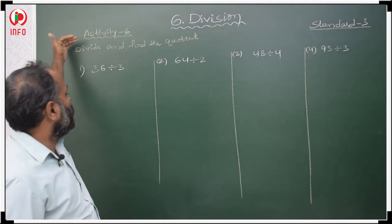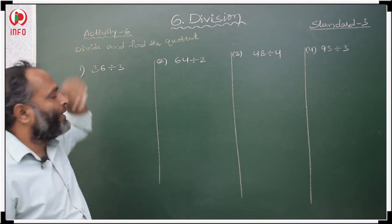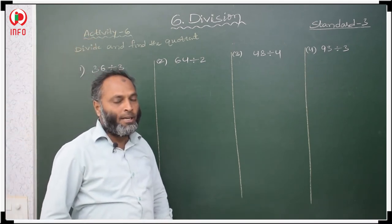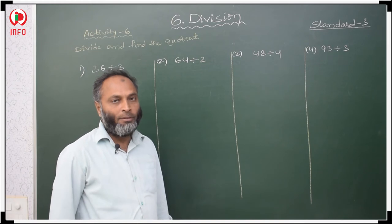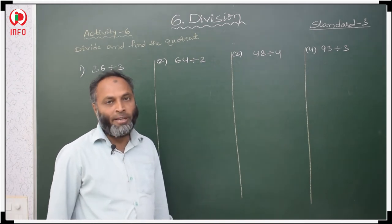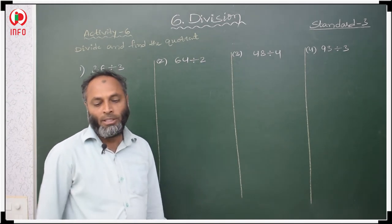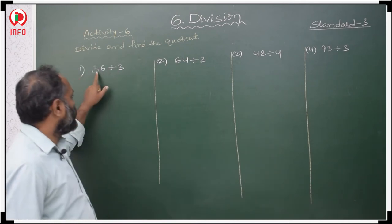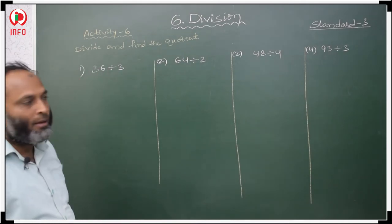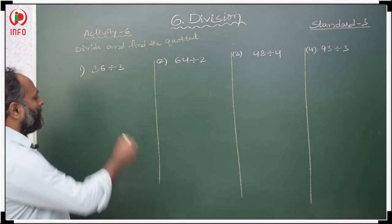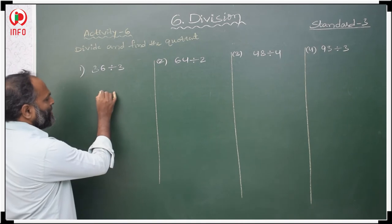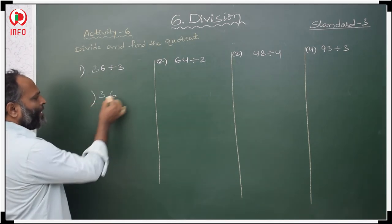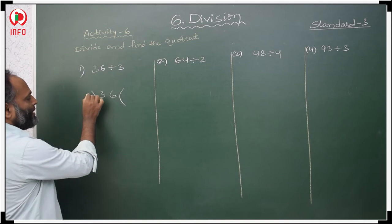In Activity 6, see here. We have to divide the given sums and write the quotient also. First question: 36 divided by 3. 36 is the dividend, and we divide with the divisor 3.